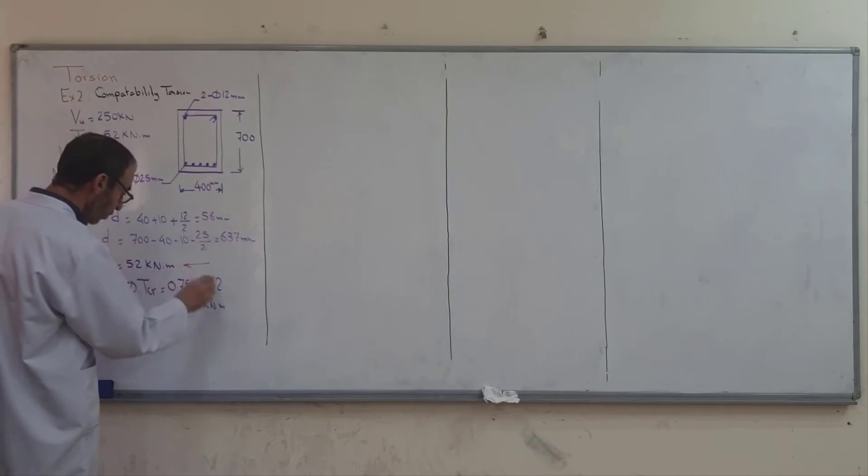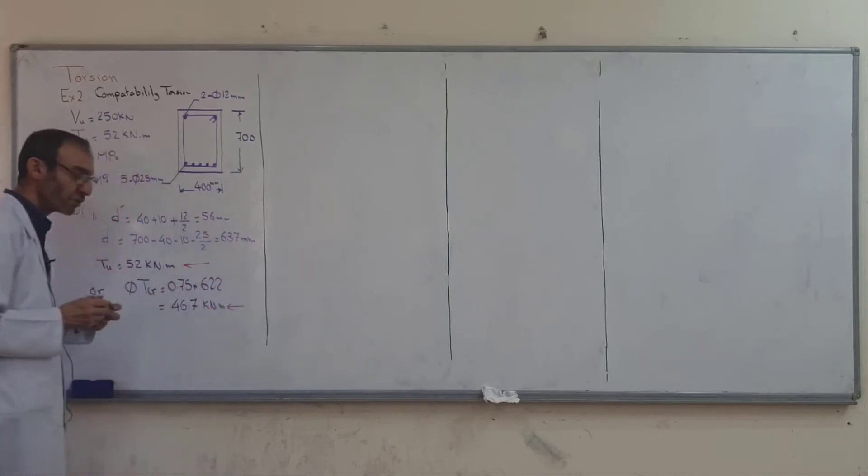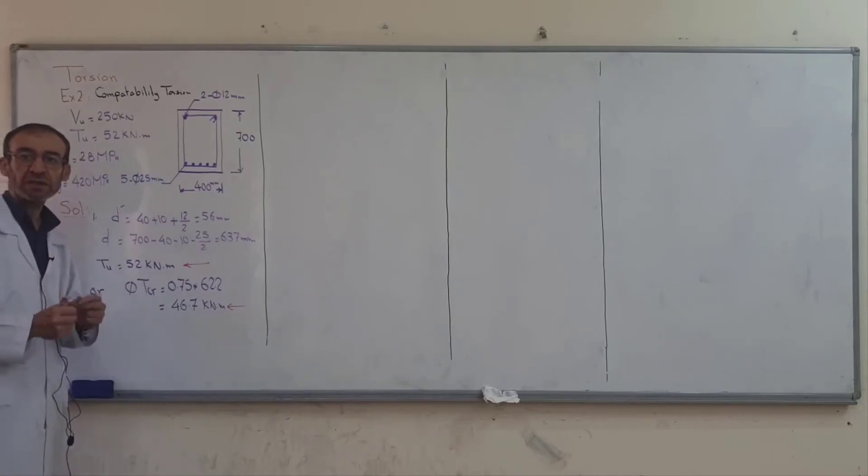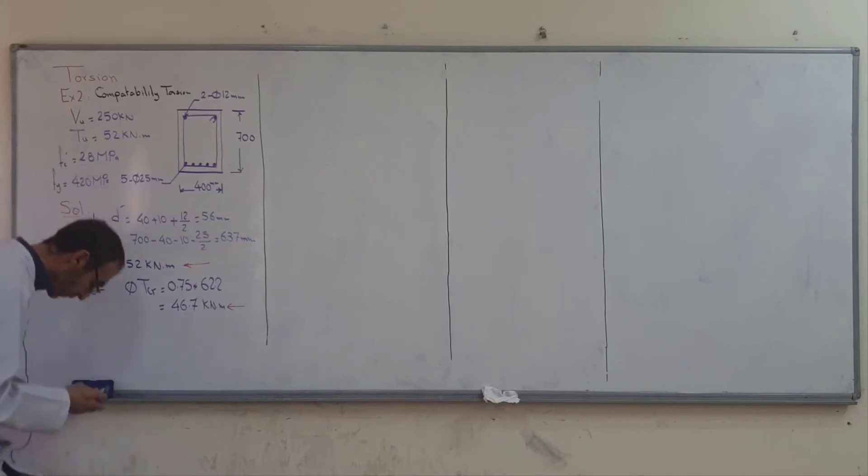We use the lesser value. This is the permission according to the ACI code. Now we decided that TU is equal to 46.7 kNm.